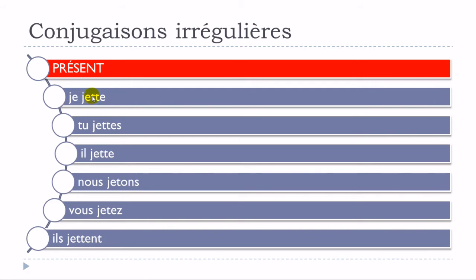Normally you should have only one T, and then you will double it. By putting two T's like that, it will open the sound of the E, so you will get 'jette'. So: je jette, tu jettes, il jette — and then here you don't touch it: nous jetons, vous jetez — and then back to the change: ils jettent. You double this letter T here.